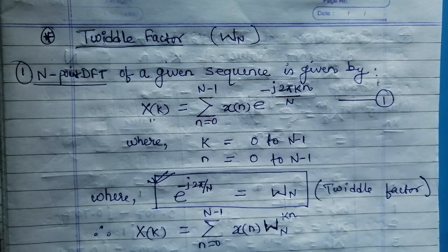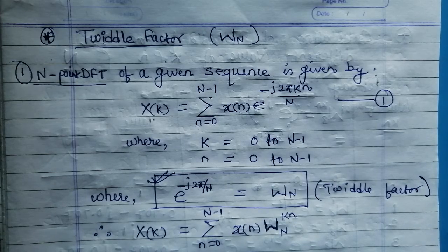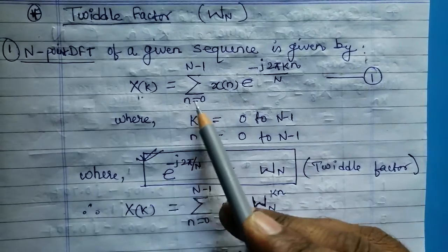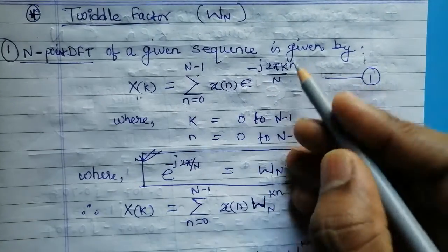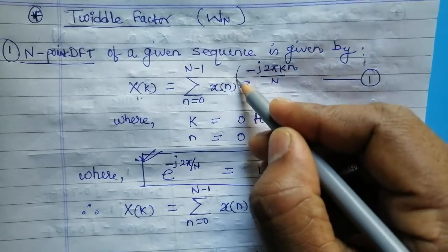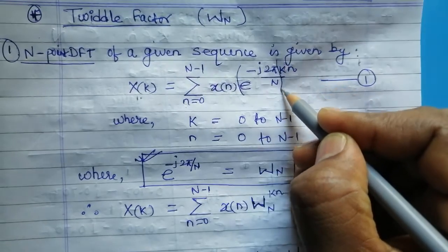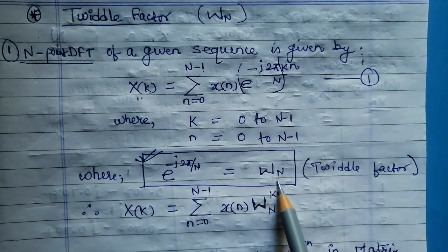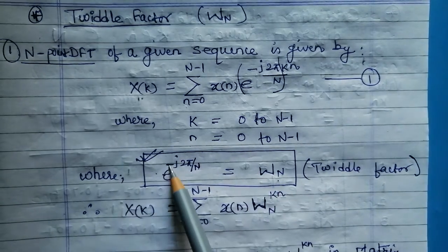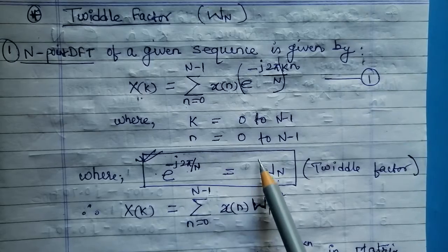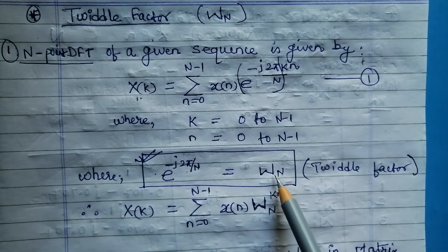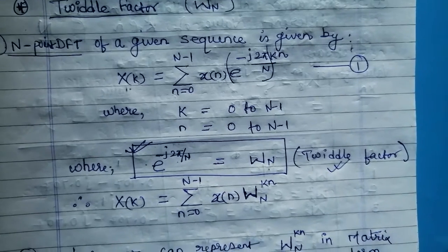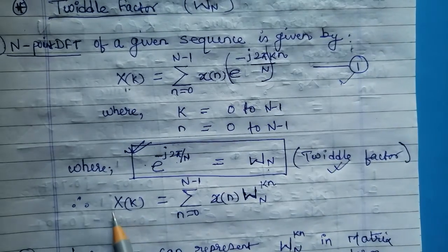Both k and n have the same range. From this formula, the part e raised to power minus j 2 pi by N is named as the twiddle factor. So W subscript N equals e raised to power minus j 2 pi by N — this is called the twiddle factor.